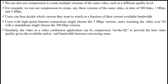For example, we can use compression to create three versions of the same video program at rates of 300 kbps, 1 Mbps, and 3 Mbps. Users can then decide which version they want to watch as a function of their currently available bandwidth.